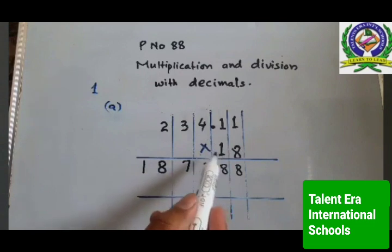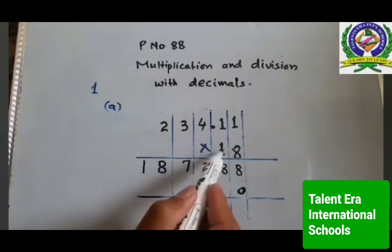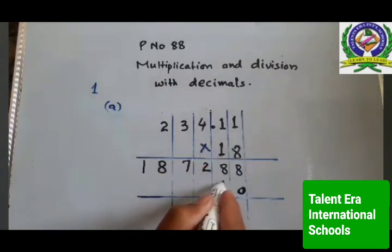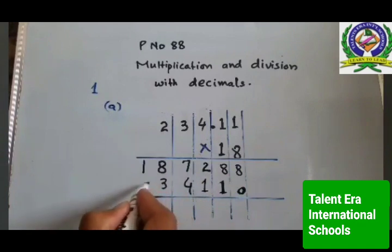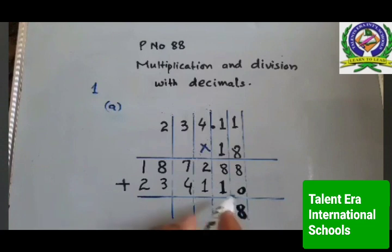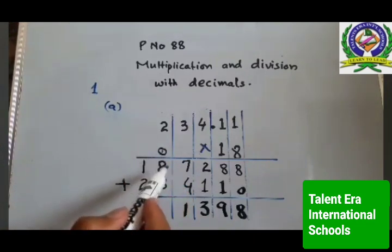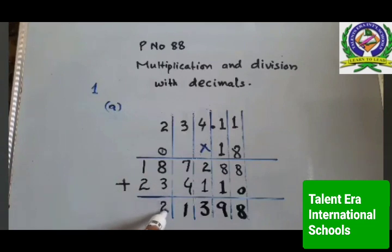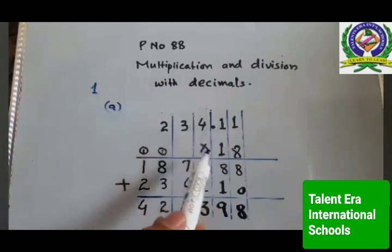Now go to the next number which is 1, but before multiplying by 1 you have to put 0 here according to the rule of multiplication. Now multiply 1 with 1 again like this: 1 with 1 is 1, next 1 with 4 is 4, next is 3, and here will be 2. Then sum up: 8 plus 0 is 8, 9, 2 plus 1 is 3, 7 plus 4 is 11, 1 will be carry.